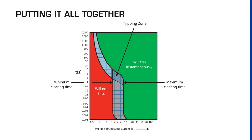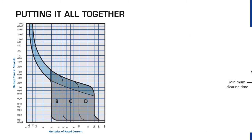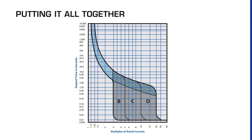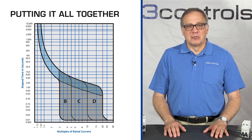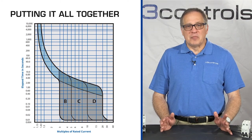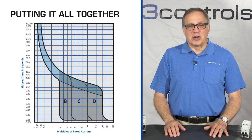Let's put it all together. This figure puts these concepts into a clearer picture. Take special note of the tripping zone where the circuit breaker may or may not trip. The three most common trip curves for miniature circuit breakers are B, C, and D. By putting all three on one chart, we can see how the thermal portion of the curves are similar to each other, but there are differences in how the magnetic coil or solenoid and thus the circuit breaker functions.